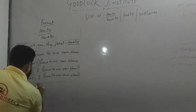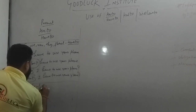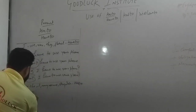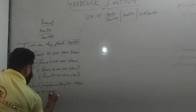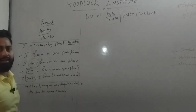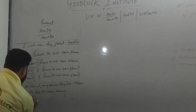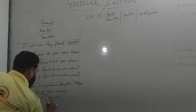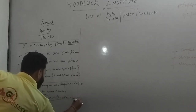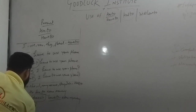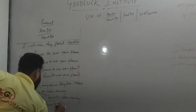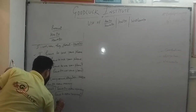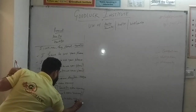Now the use of has to. With he, she, it, any name, and singular subjects, use has to. Like: He has to earn money. Usse paise kamane hai — meaning he has to earn money. Interrogative: Does he have to earn money? Kya usse paise kamane hai. Interrogative plus negative: Doesn't he have to earn money? Kya usse paise nahi kamane hai.